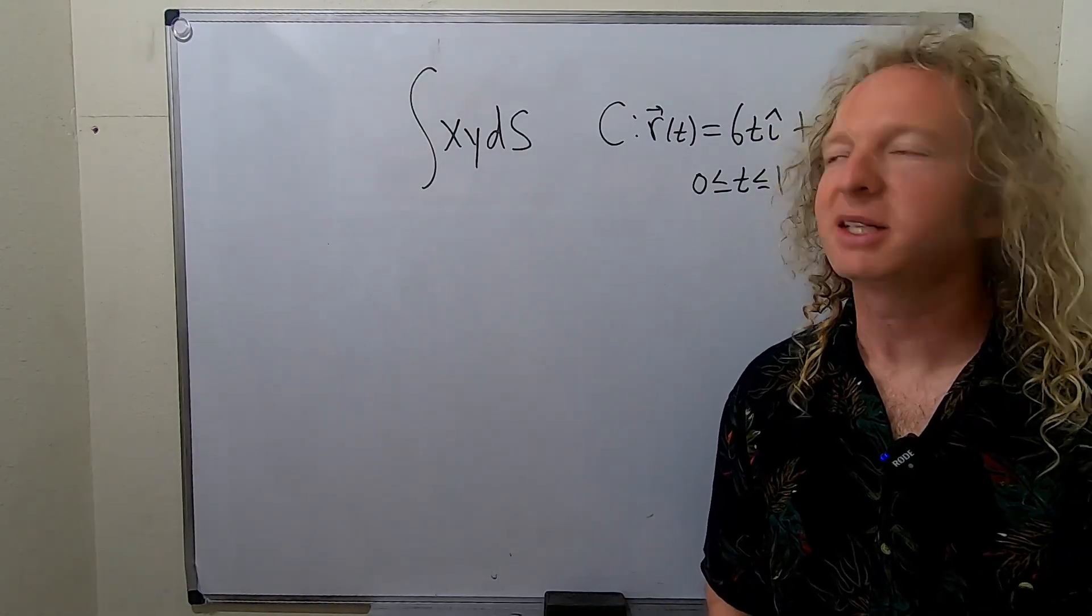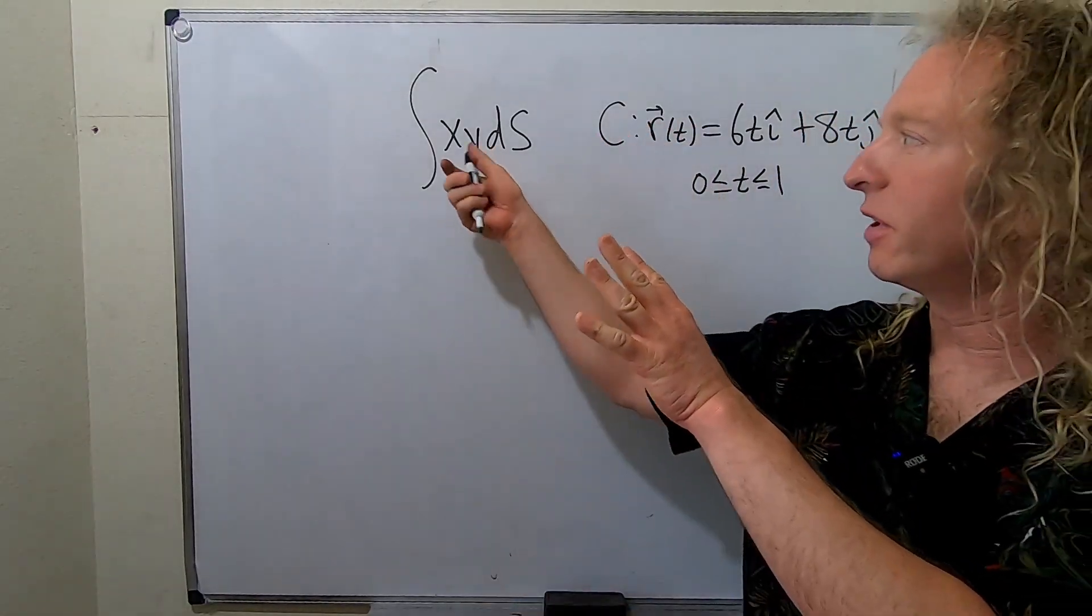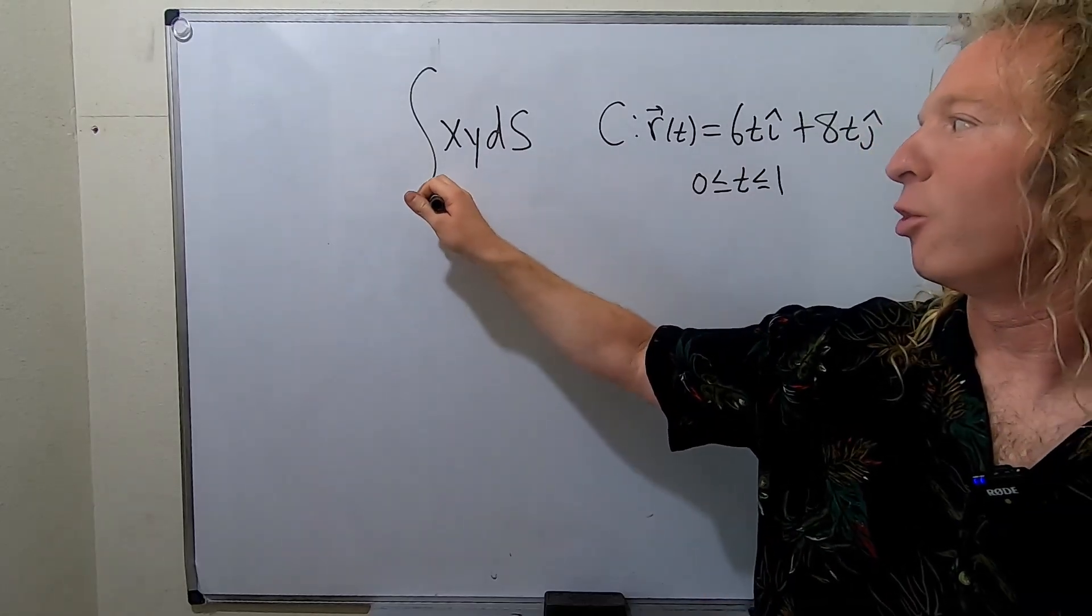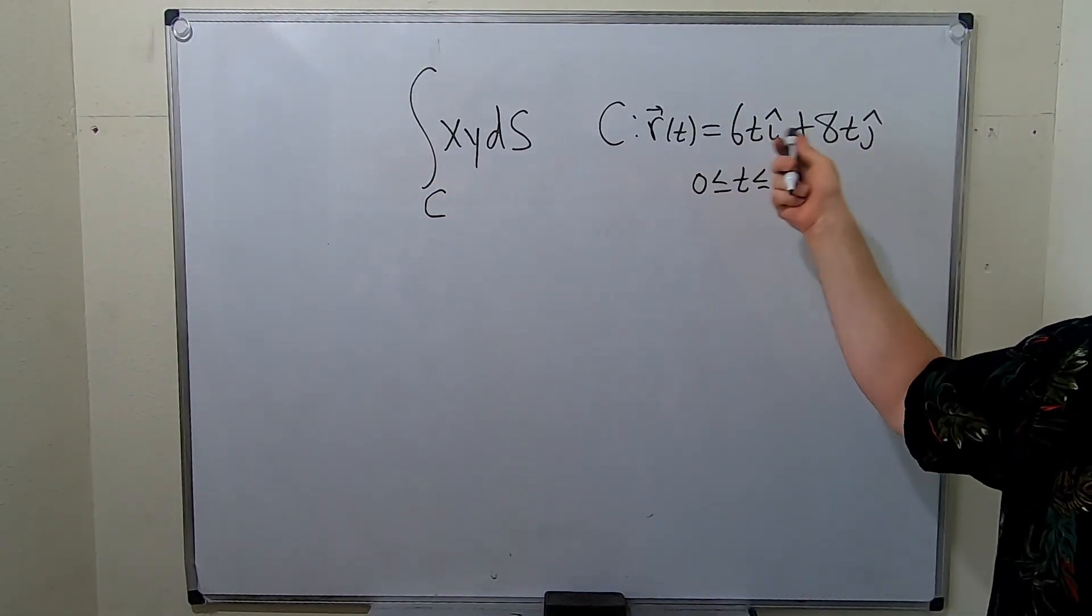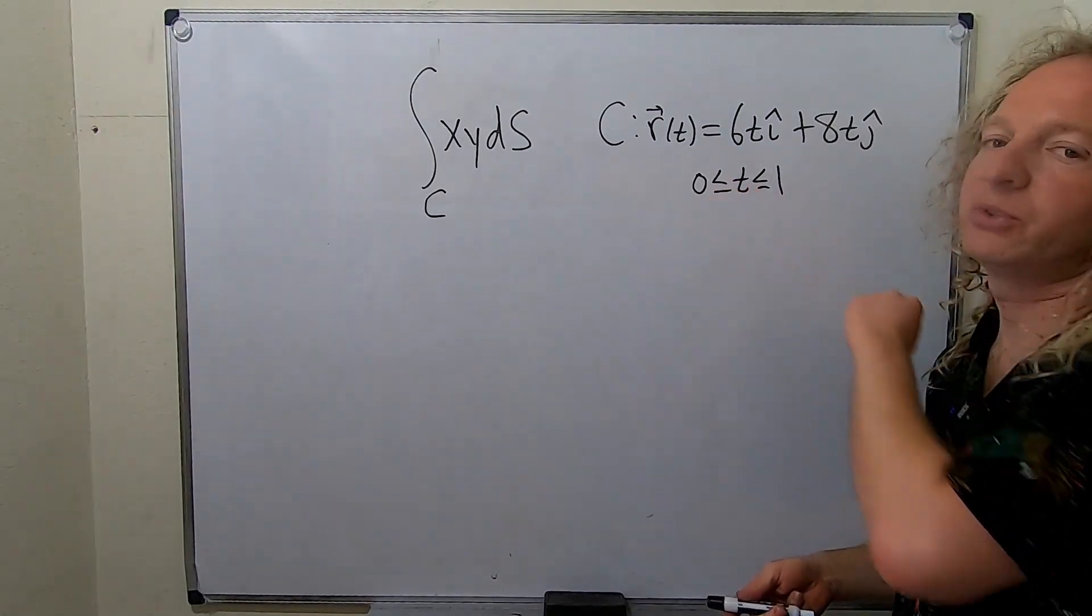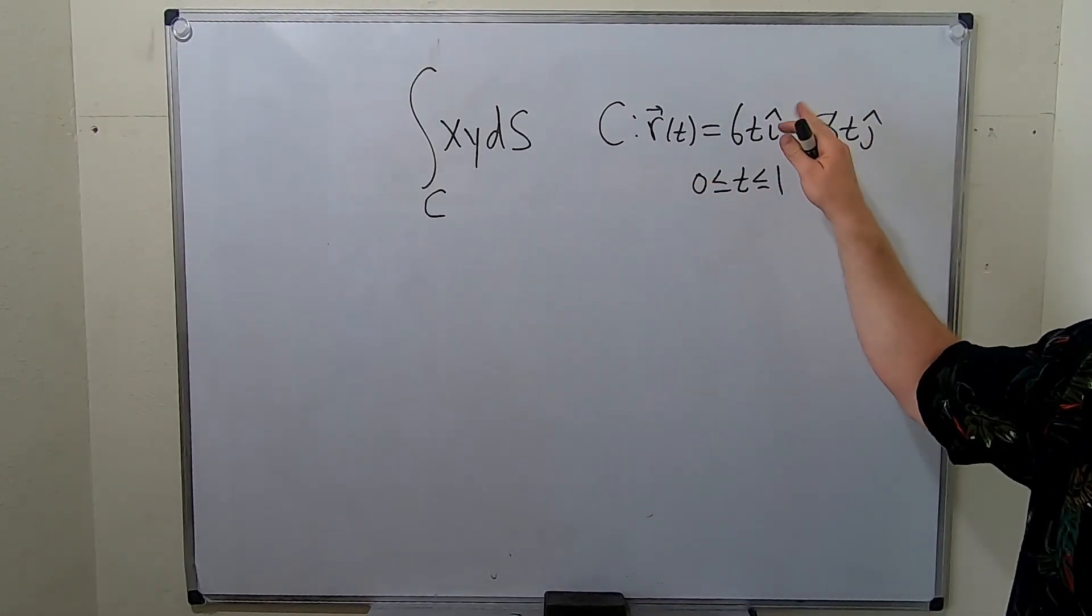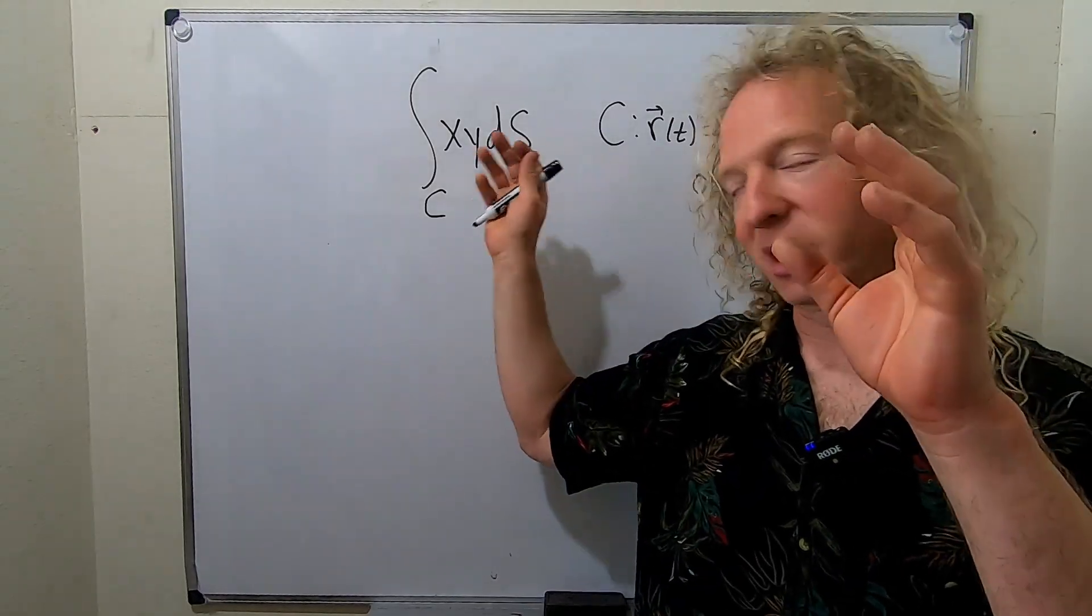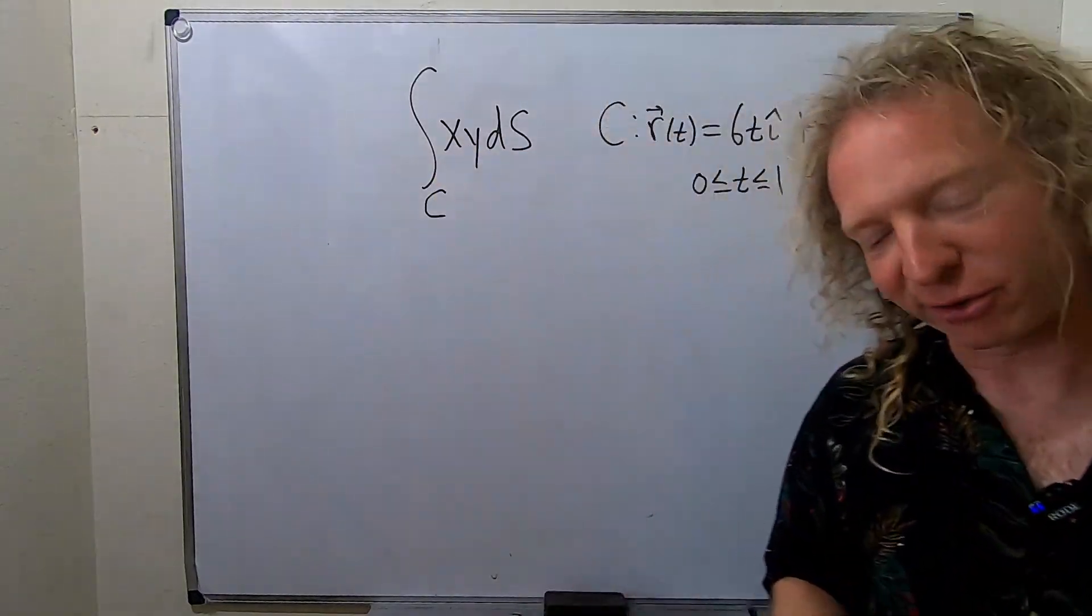Okay, so let's go ahead and work out a line integral. We have a line integral of x times y, ds, over the curve c. c is given by this vector-valued function, which runs from t equals 0 to t equals 1. So this is a curve, and we have to integrate this function over this curve. It's called a line integral.